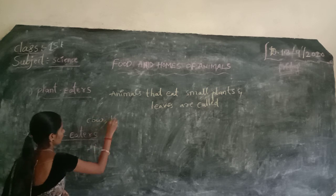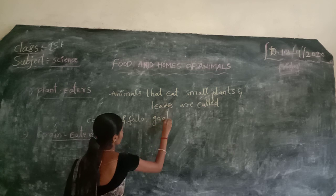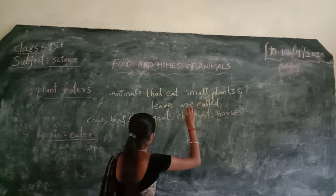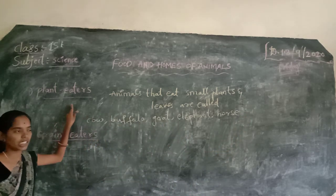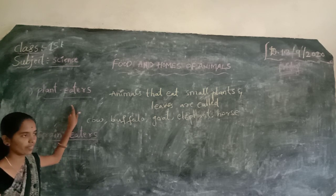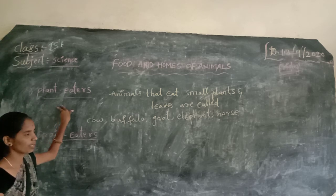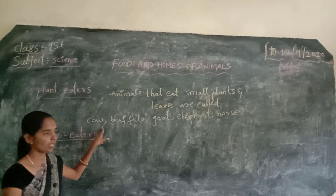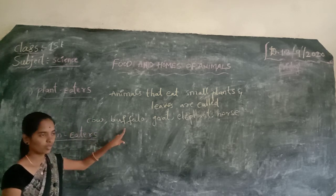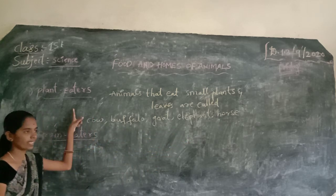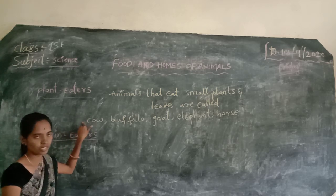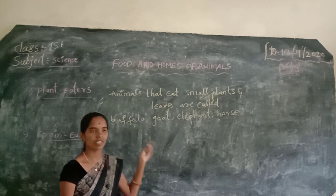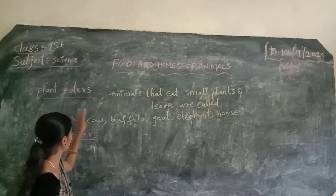For example, cow, buffalo, goat, elephant, horse — these are plant eaters. Plant eaters need small plants, leaves and grass only. Their scientific name is plant eaters.